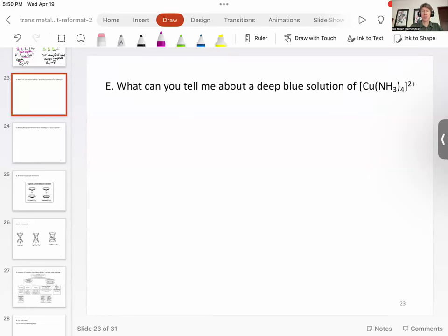What can you tell me about a deep blue solution of [Cu(NH₃)₄]²⁺? First off, ammonia is a neutral molecule. It's going to have nitrogen donating pairs of electrons, and we have four of them. So coordination number equals four.